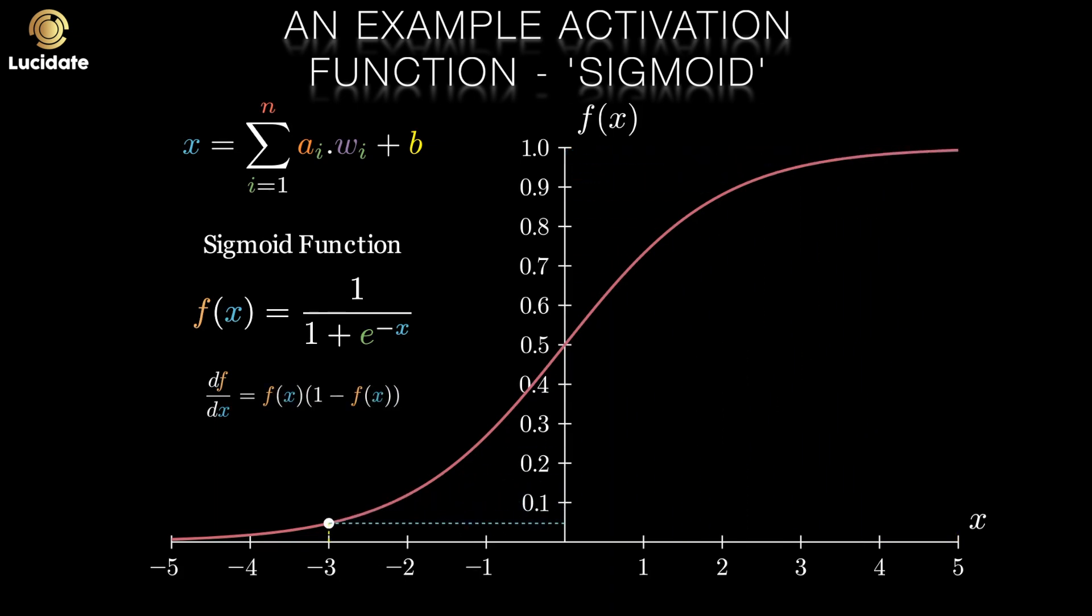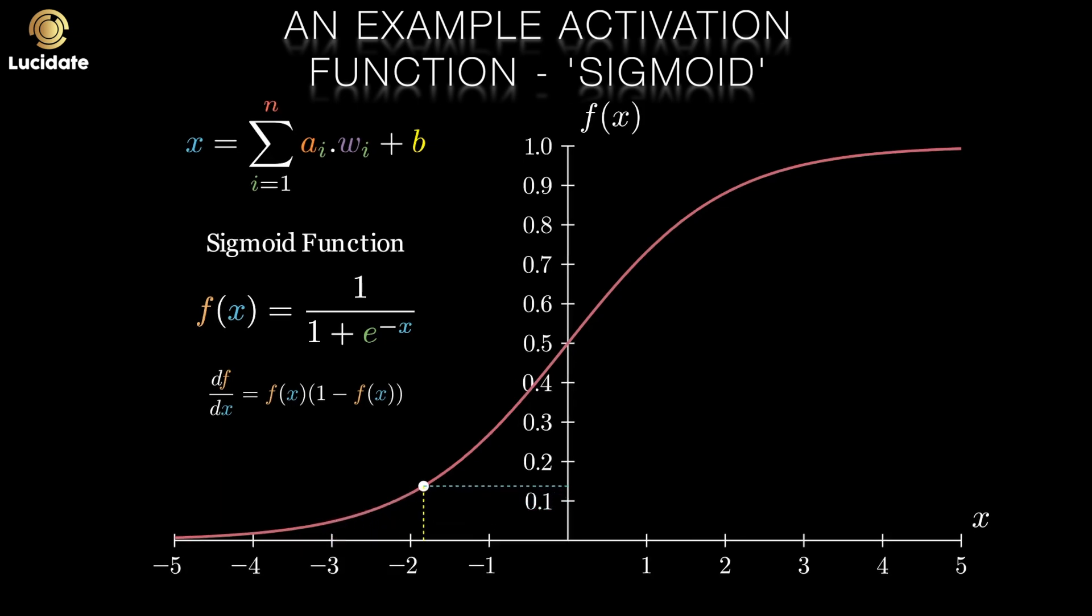Recall that the inputs are multiplied by weights and these are summed and then a bias is added. This total is then fed into the sigmoid activation function as an input, and the input is represented here on the x-axis.